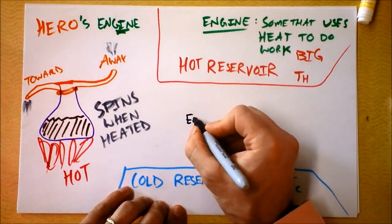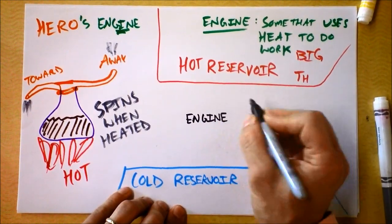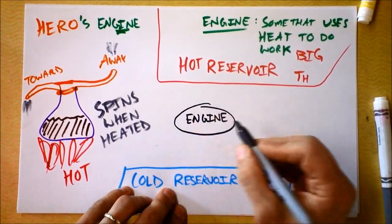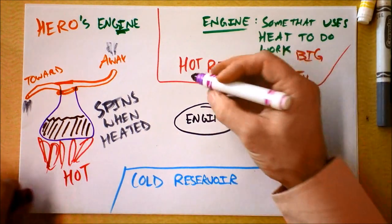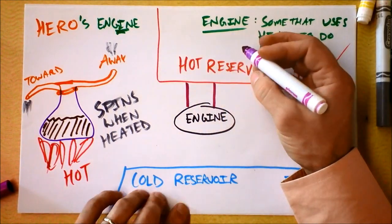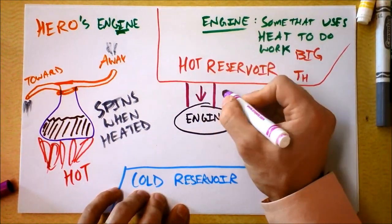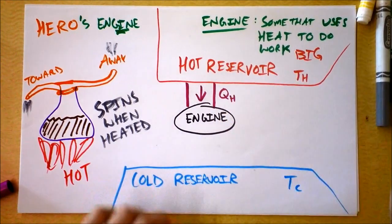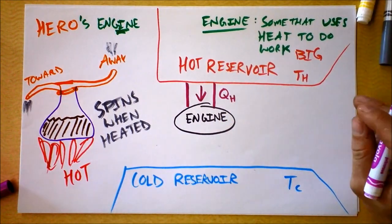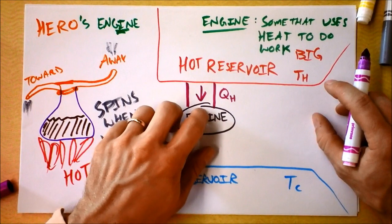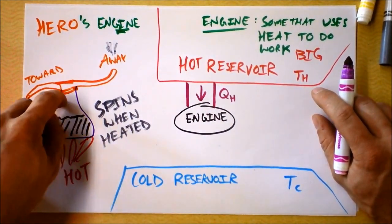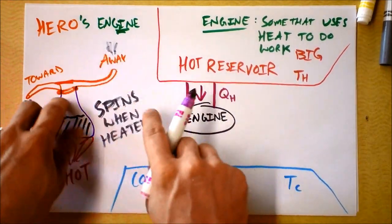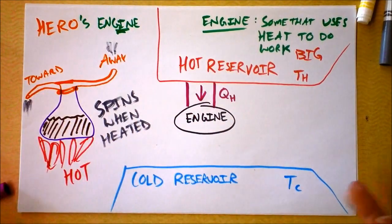The engine is taking in some heat from the hot reservoir. The engine is taking in some heat and we'll call this QH. That's the heat that comes from the hot reservoir. And the engine is doing work. This engine can do mechanical work. You could mount a pulley on it and wrap something around and lift up a mass because it's spinning.